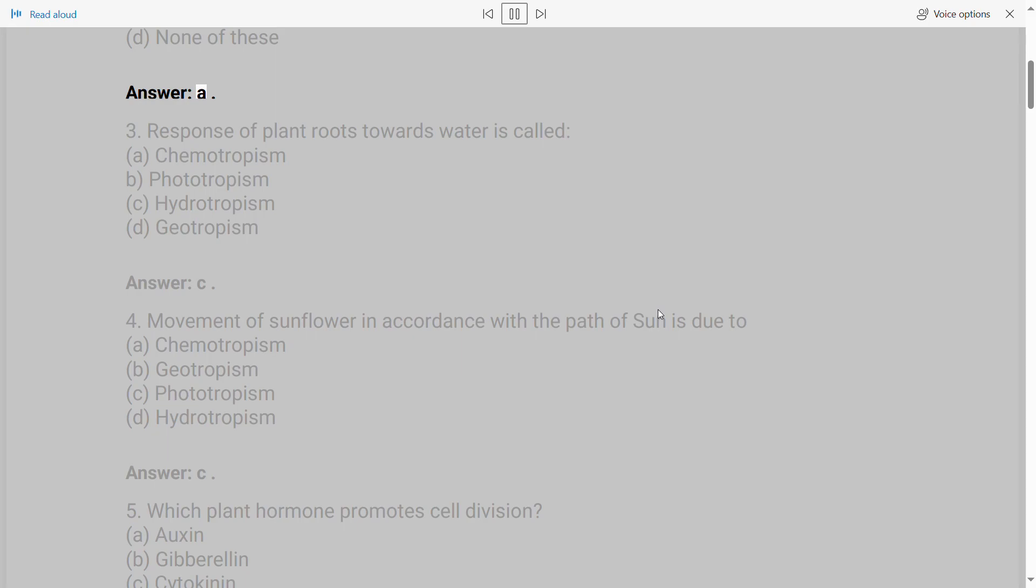3. Response of plant roots towards water is called A. Chemotropism B. Phototropism C. Hydrotropism D. Geotropism. Answer: C.